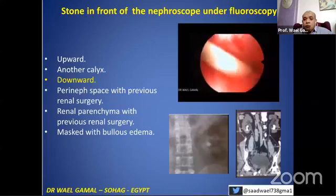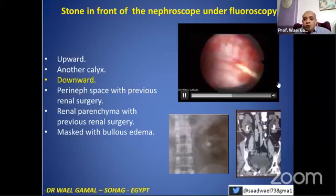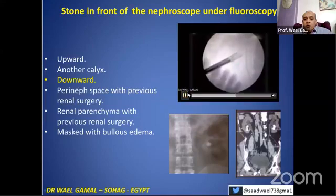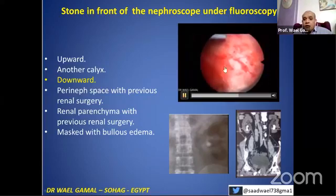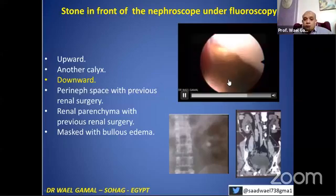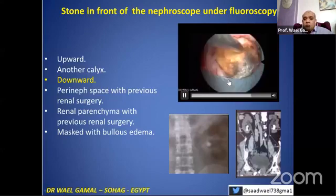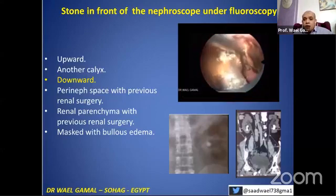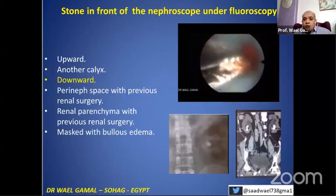What happened? Under fluoroscopy, we find a stone — it looks like the same stone. I did nothing? No — the branches of the stone in the lower calyx are anterior and posterior. You have to turn your nephroscope looking downward for the posterior branch, the posterior calyx of the lower calyx. This is the anterior branch of the lower calyx.